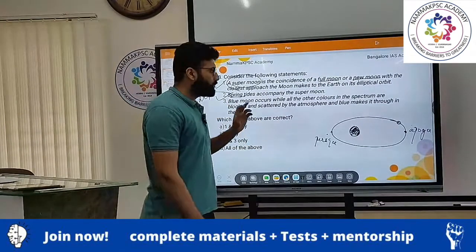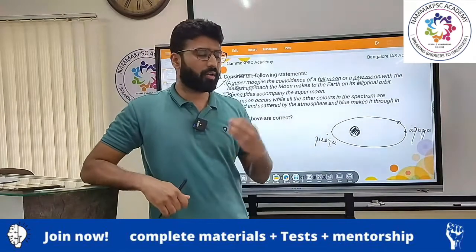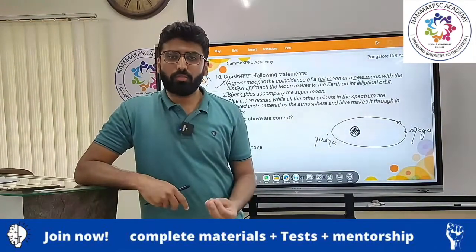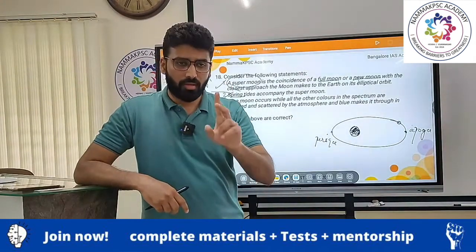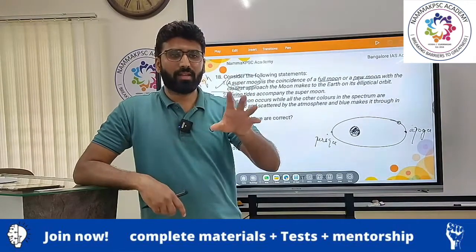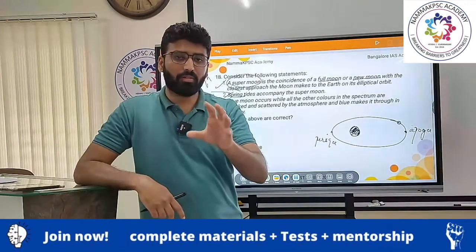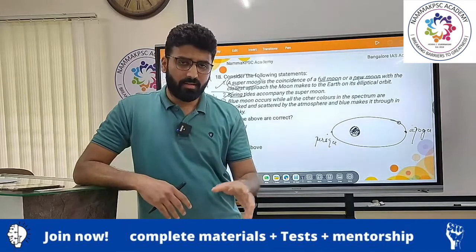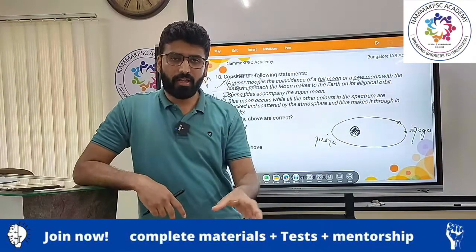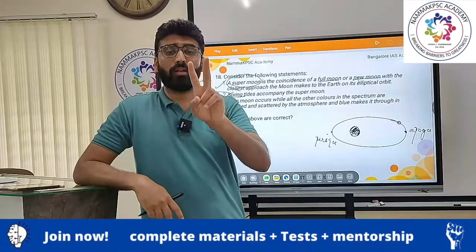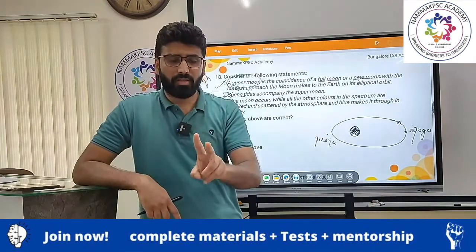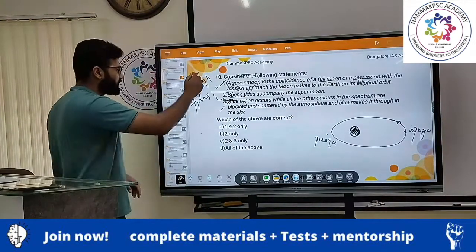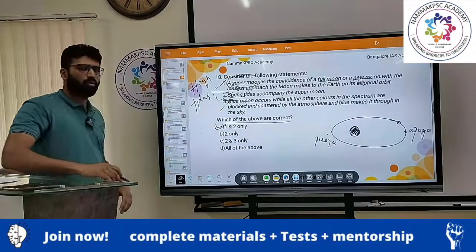Third statement: blue moon occurs while other colors in the spectrum exist — no, this is absolutely wrong. A blue moon is when you have a second full moon in the same calendar month. The lunar cycle is about 29 days whereas a solar calendar month is about 30 or 31 days, so occasionally a month will have two full moons. The second full moon in that month is called a blue moon — that is the origin of the phrase 'once in a blue moon.' So the third statement is wrong. Statements 1 and 2 are correct — answer is 1 and 2 only.